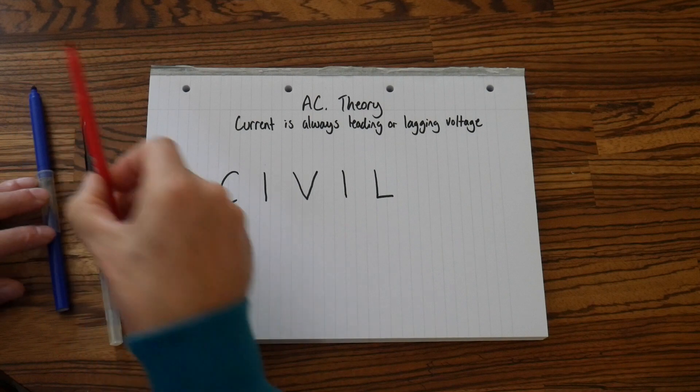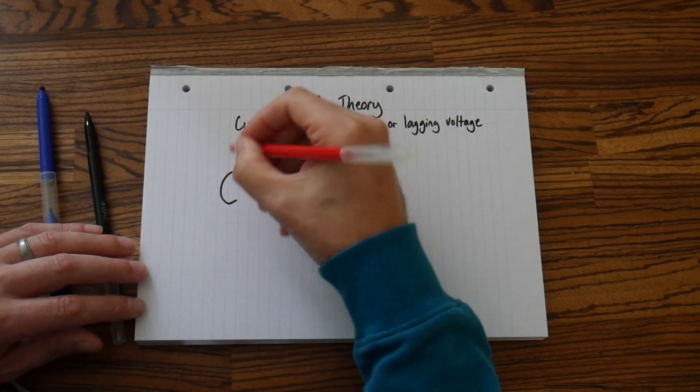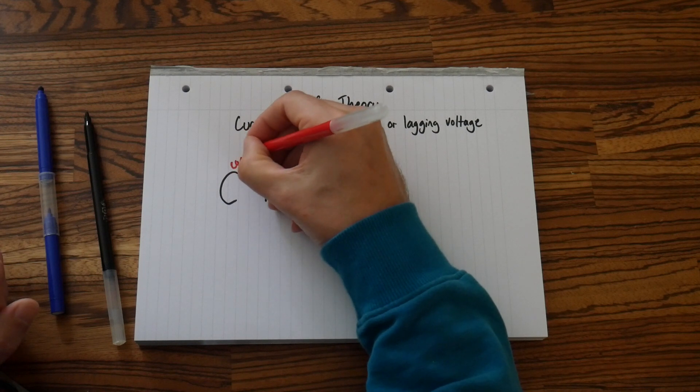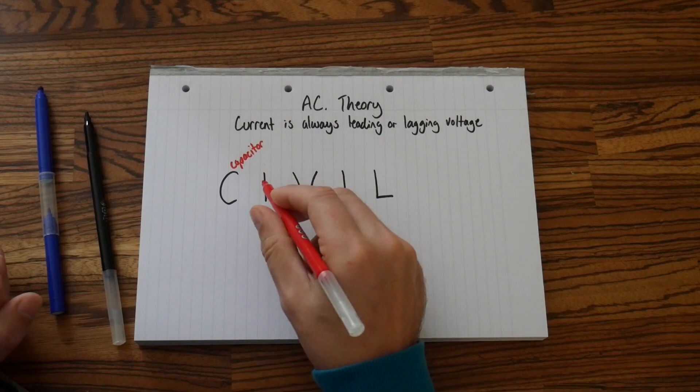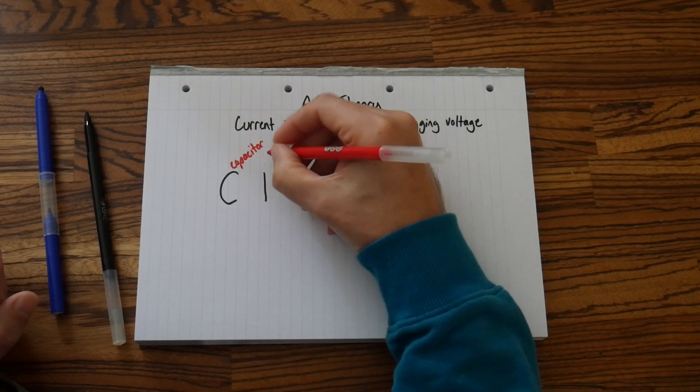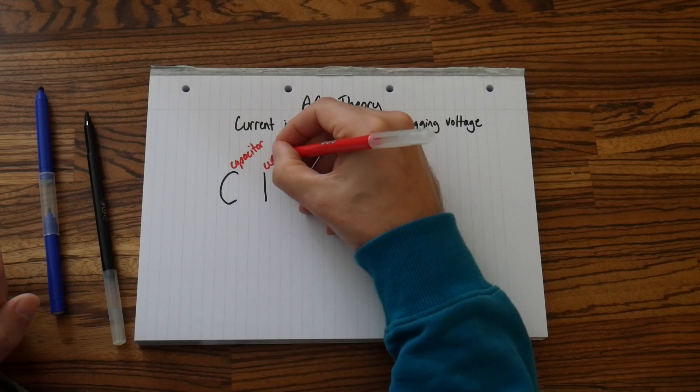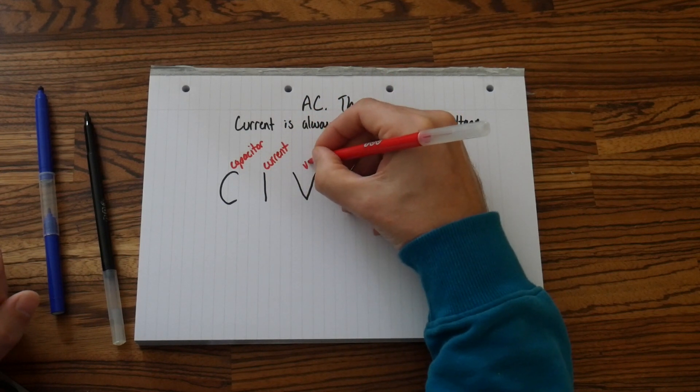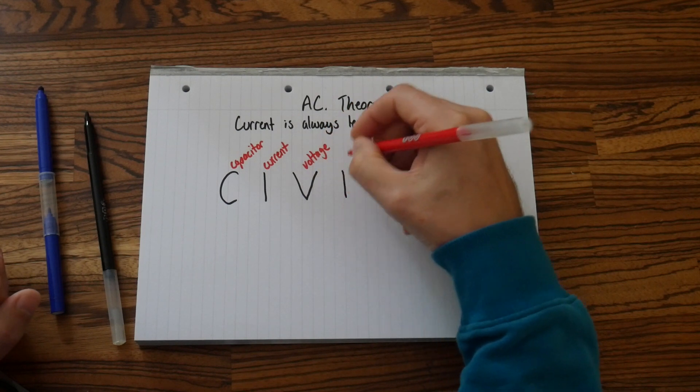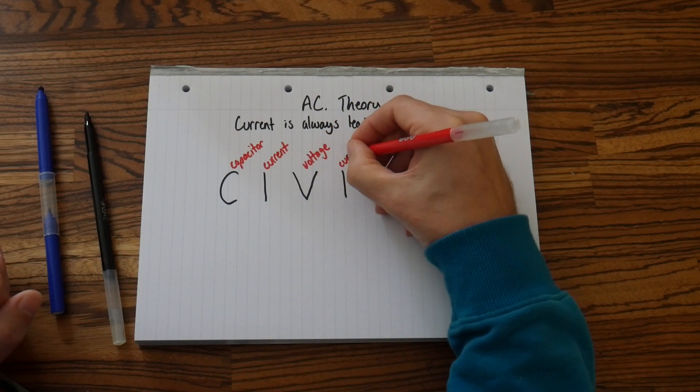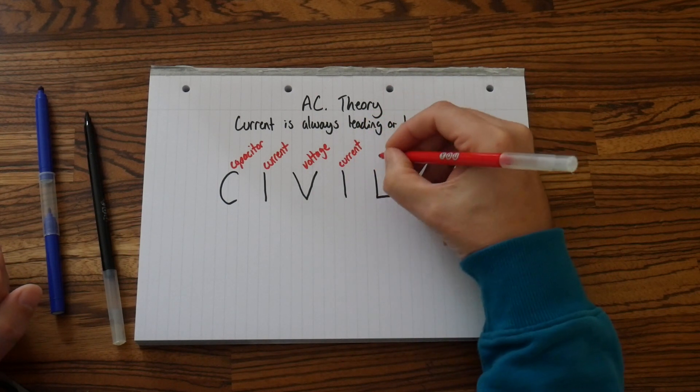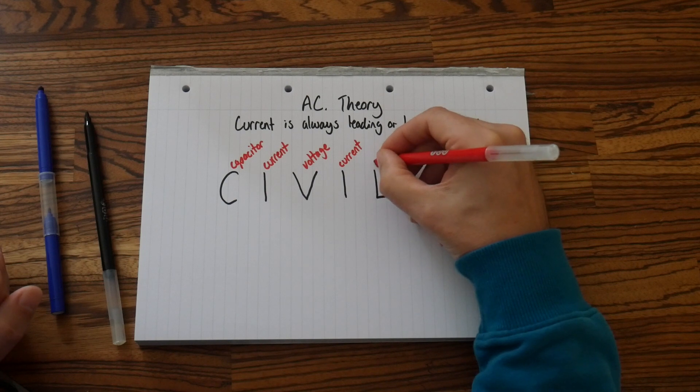Now let's write down what each of those means. So C is a capacitor. I stands for current, that's the form of the symbol. V is voltage. I again is current. And L is an inductor.